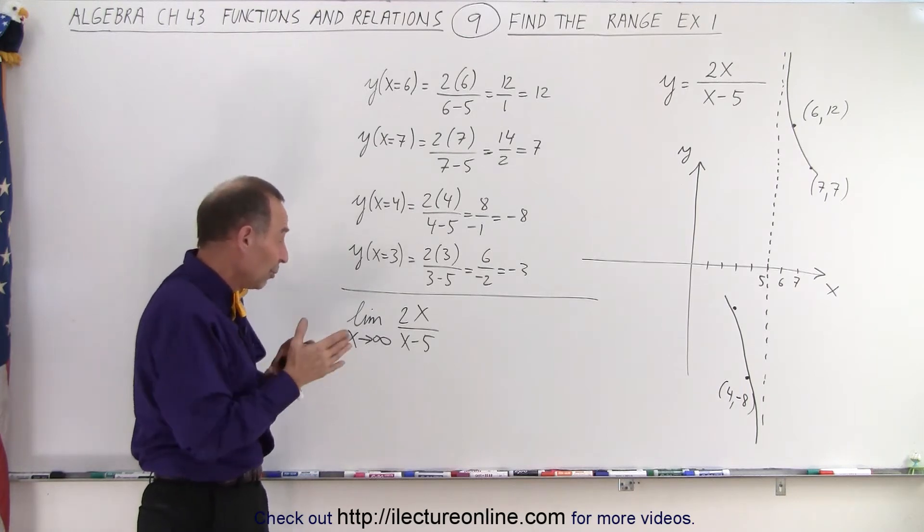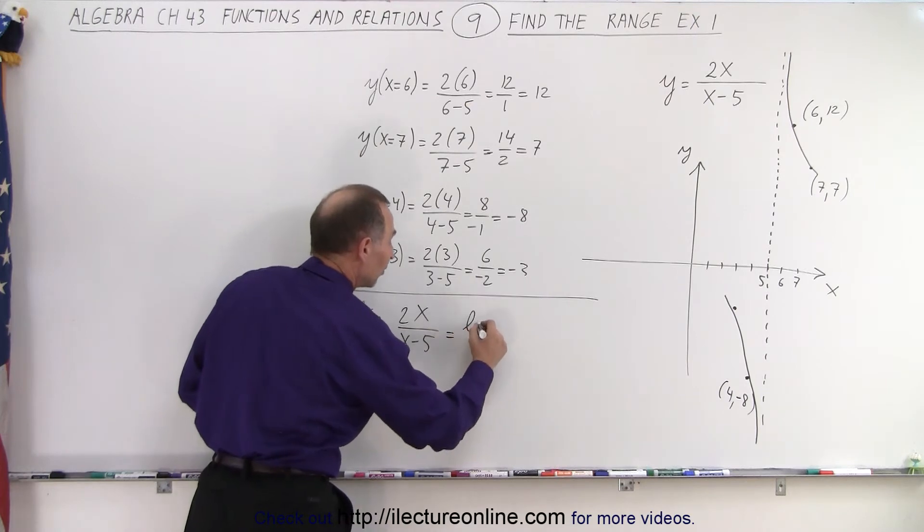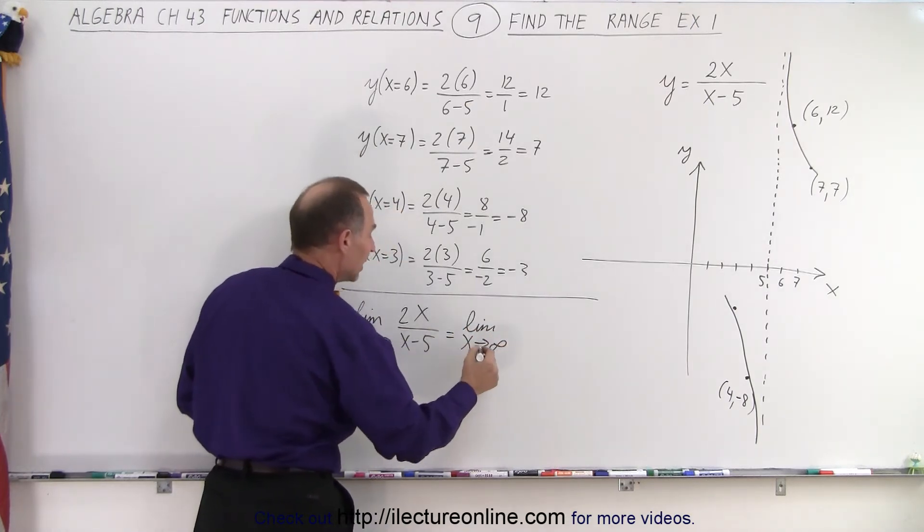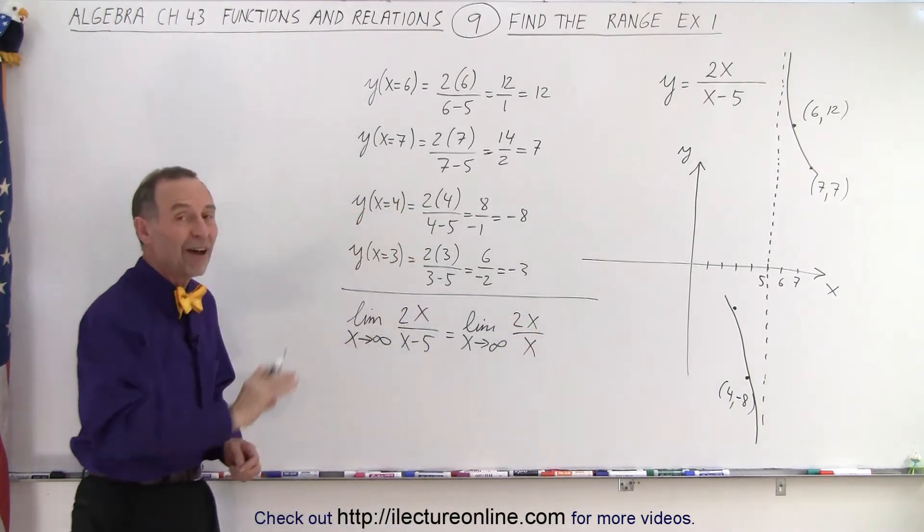That minus 5 becomes less and less significant. And in the end, it's almost completely insignificant. So in other words, this can be set to be the limit as x becomes infinitely big. That will then be 2x over x. We can simply forget about the 5.